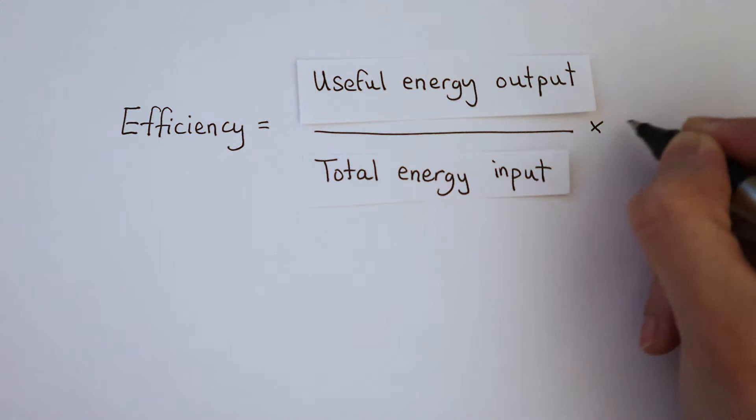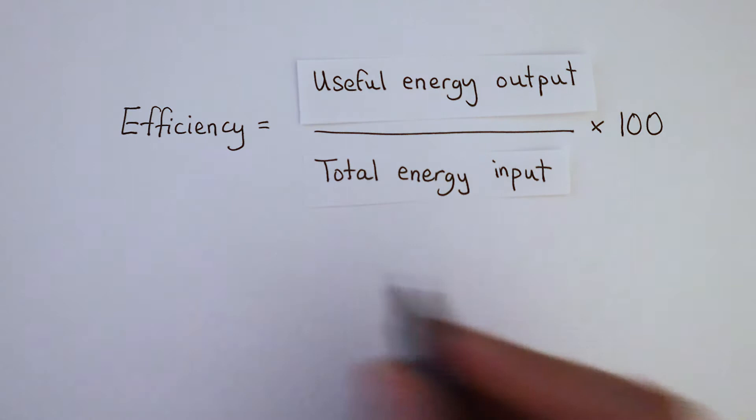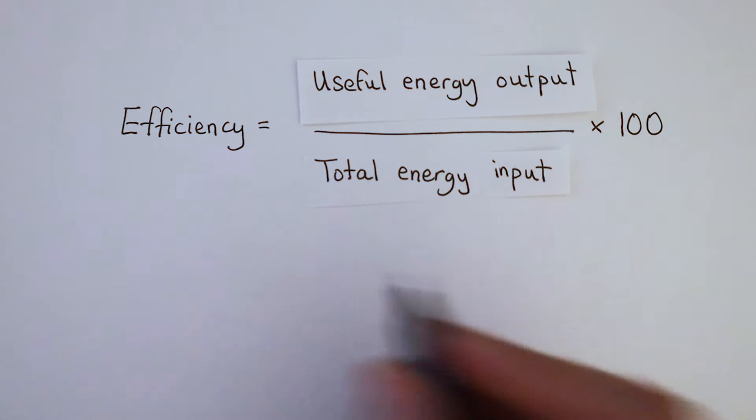So the efficiency of the light bulb is 20 divided by 50 times by 100. The bulb is 40% efficient.